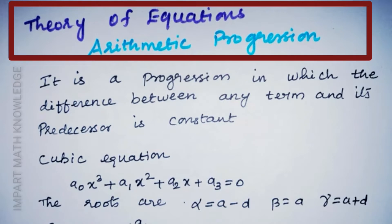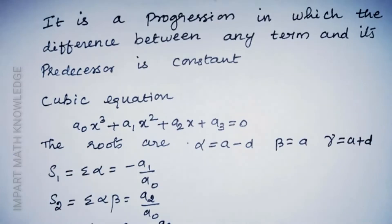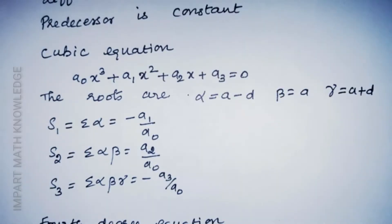Welcome back to the channel. This is a continuation of the previous video about arithmetic progression. An AP is a sequence of numbers that has a fixed common difference between any two consecutive numbers. For a cubic equation, the roots are assumed as a-d, a, and a+d. Here s1 is the sum of roots taken one at a time, s2 the sum taken two at a time, and s3 the product of the roots.